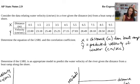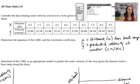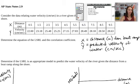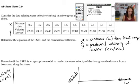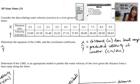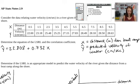To determine the regression line, go to stats, over to calculate, and down to the eighth option: LinReg a + bx. Make sure your x-list is L1 and y-list is L2. I'm going to store my regression equation in Y1 by going to vars, Y-vars, function, Y1, then calculate.